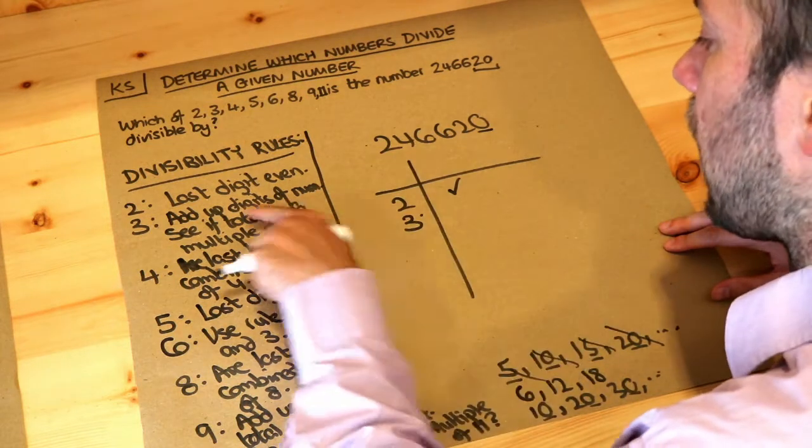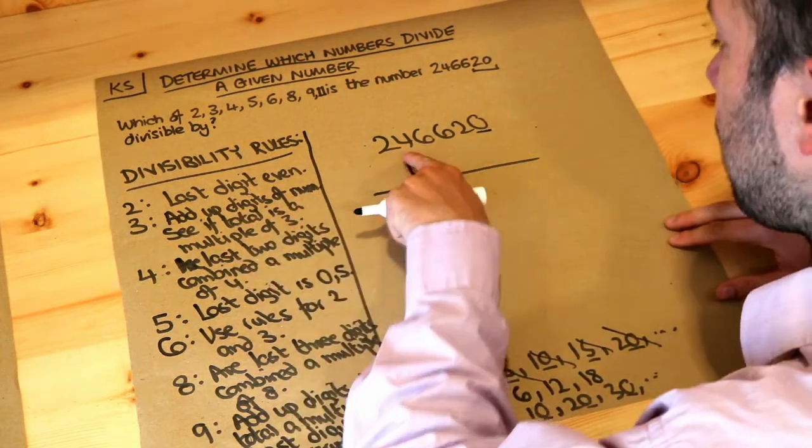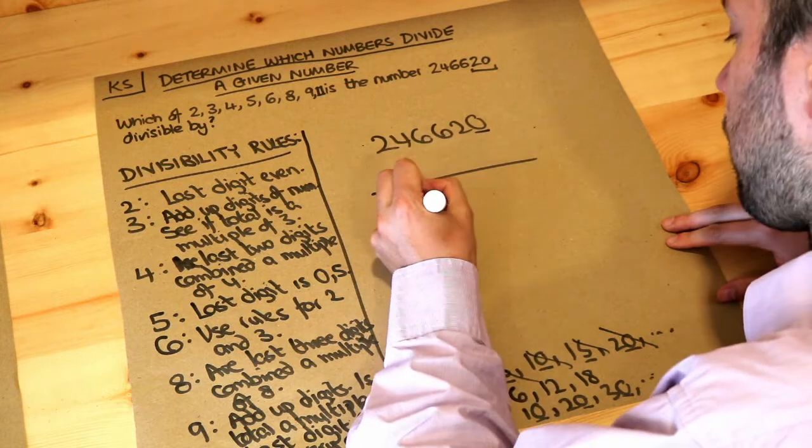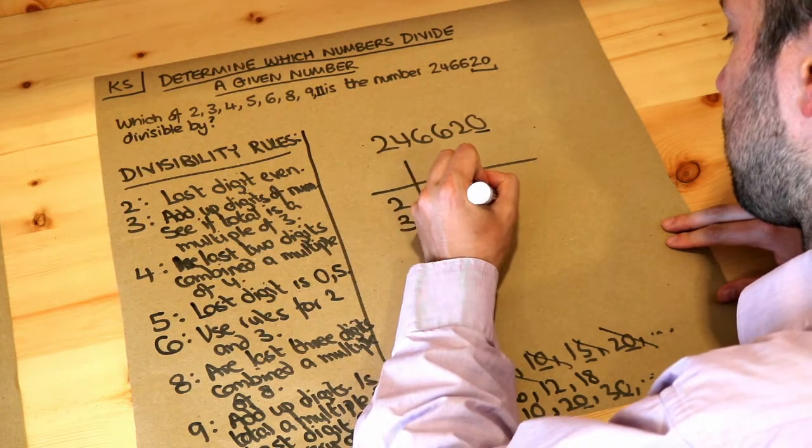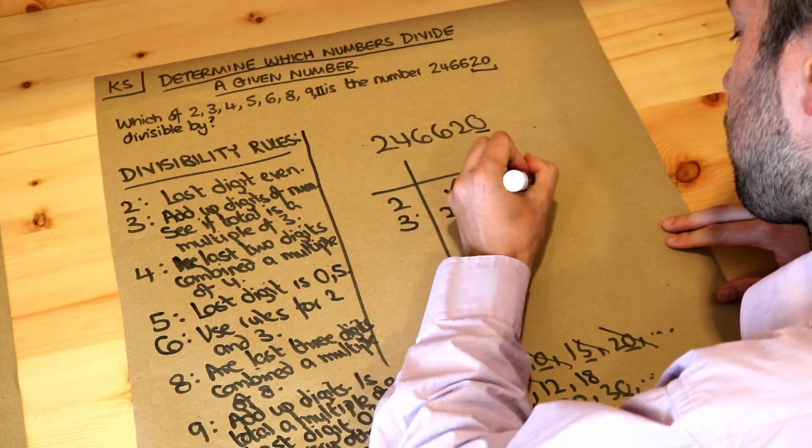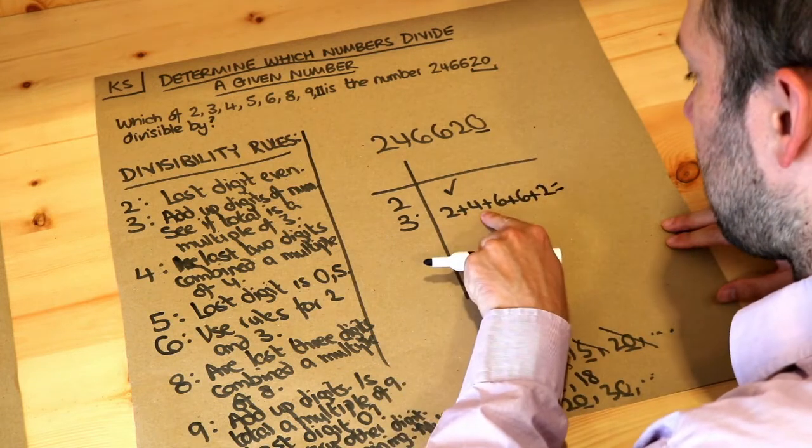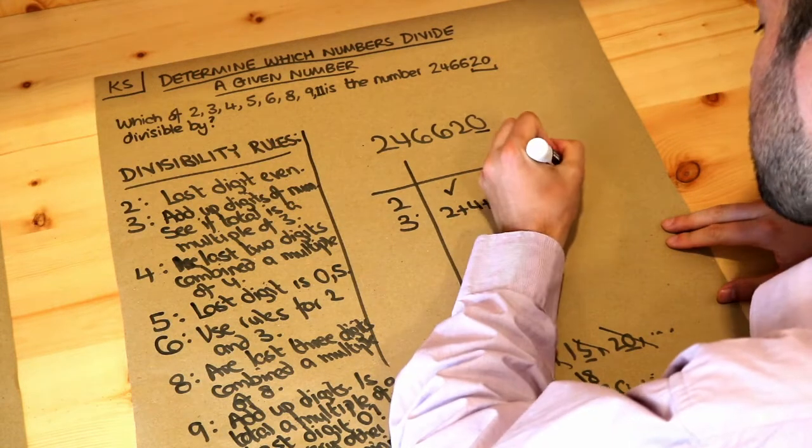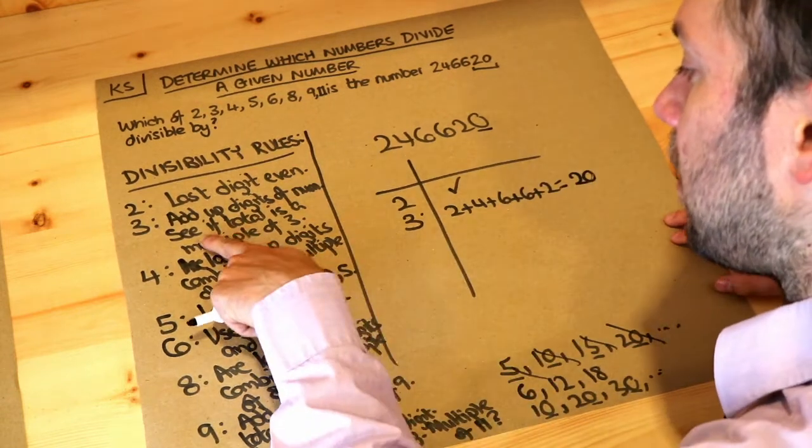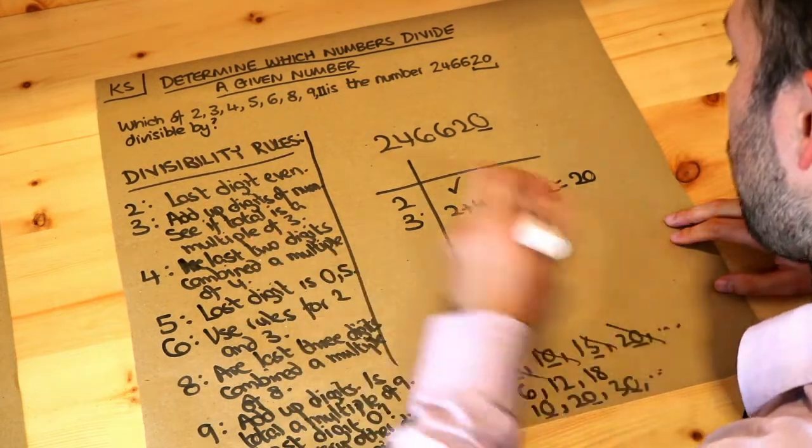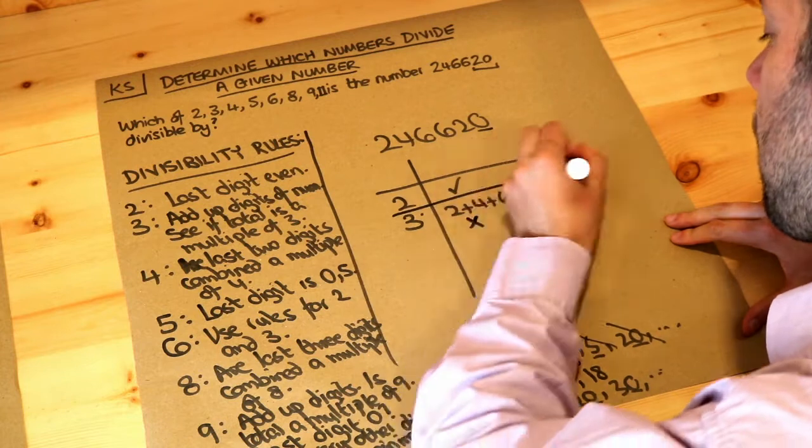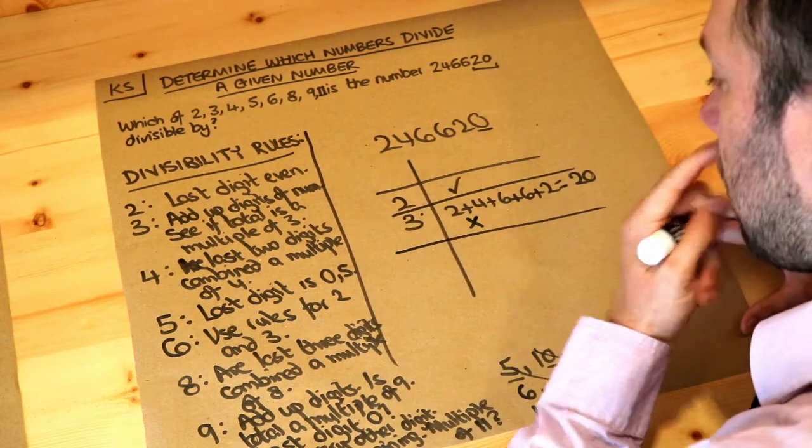What about 3? We add up the digits of the number. So if we add up these digits, 2 plus 4 plus 6 plus 6 plus 2 plus 0. Now that's 6, 12, 18, 20. Now is 20 a multiple of 3? No it isn't. So therefore this number is not a multiple of 3.